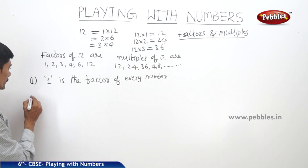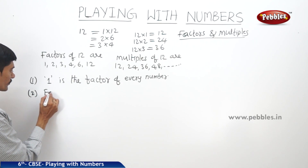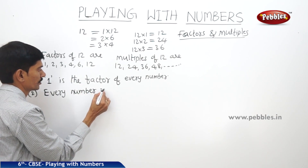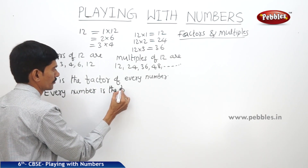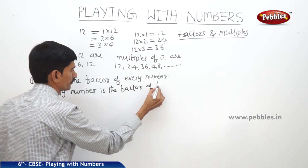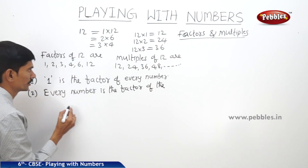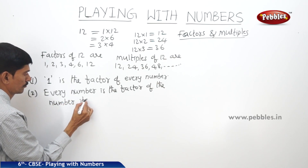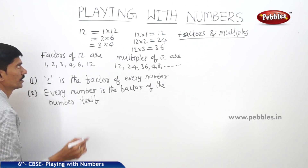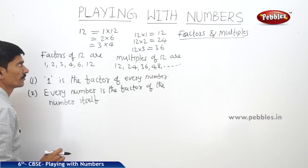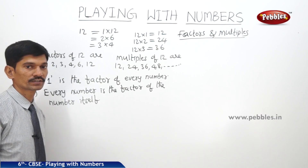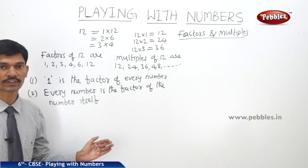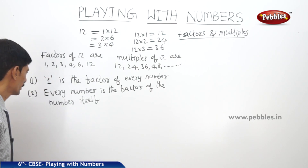The next property is: every number is the factor of the number itself. Here 12 is the factor of 12, 6 is the factor of 6, and 10 is the factor of 10. So every number can be considered as the factor of the number itself.